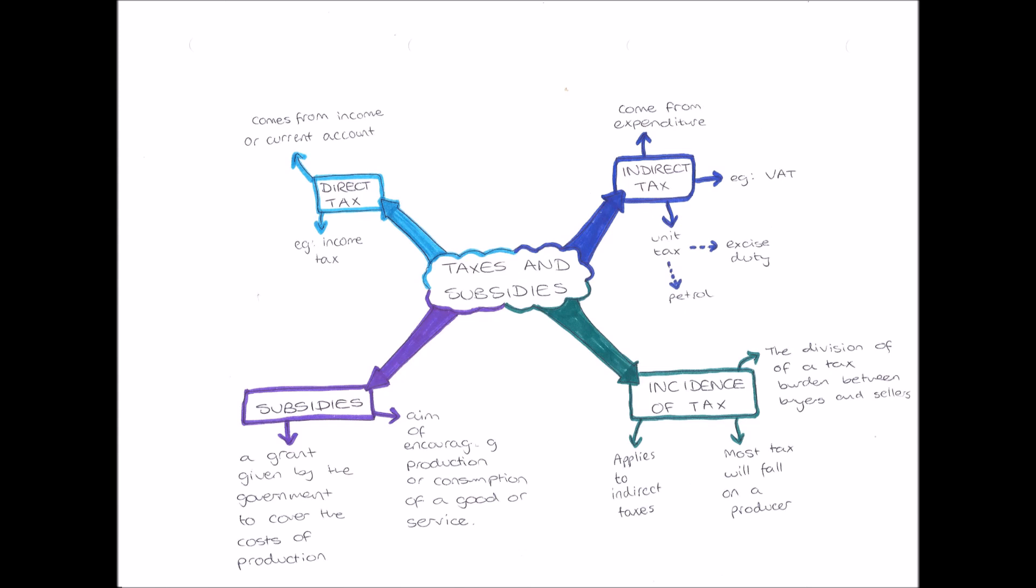First of all, in the top left, direct taxes. Direct taxes are taxes that come straight from us, taxes that come straight from our income or from our current account. This is money that we never see. So for example, if I were to earn £26,000 a year, £3,000 of this might be income tax.